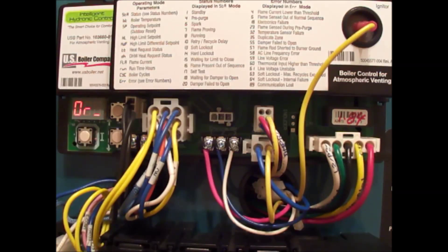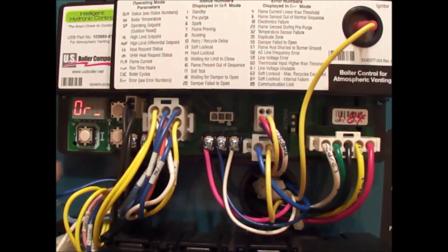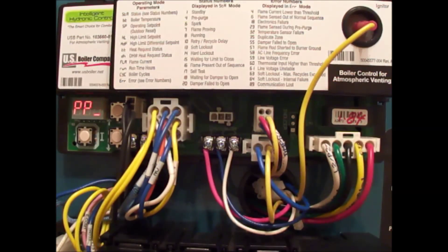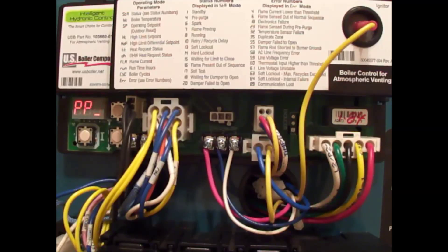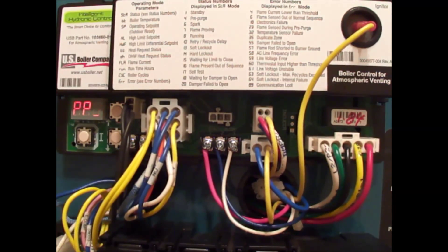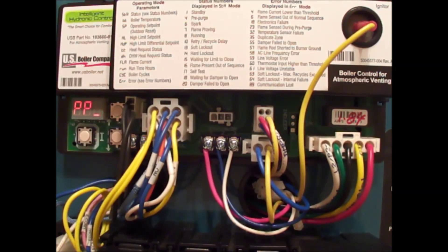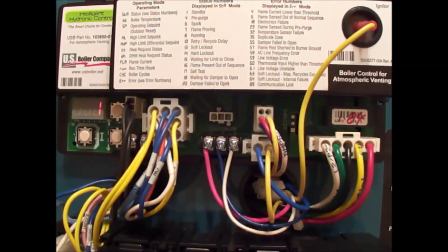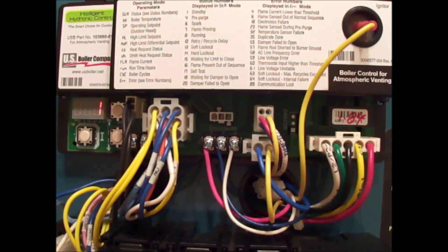The next one we have is pre-purge. Pre-purge is a setting where the pump comes on first and we use residual heat first. This is a nicer feature because we're using the heat in the boiler before we fire the boiler. If the boiler has more than 140 degrees water temperature and we get a call for heat, we do not fire the boiler.